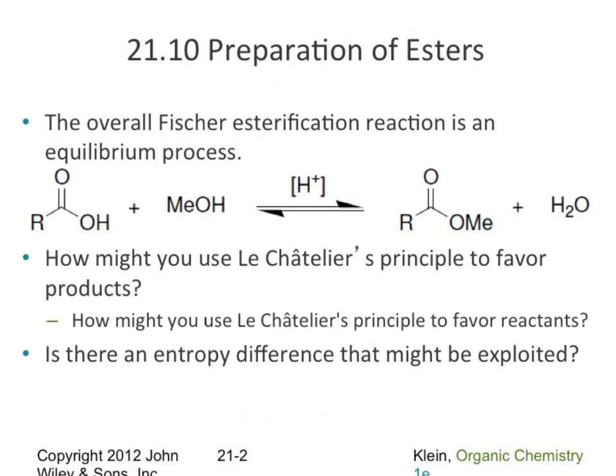So how can we use Le Chatelier's principle to actually make our ester? We can try to remove water — take it out during the experiment. We can also remove the product to force more product formation. Adding a catalyst speeds the reaction but does not get you more products — it gets you to that set concentration of products faster, but it speeds the reverse reaction just as much.